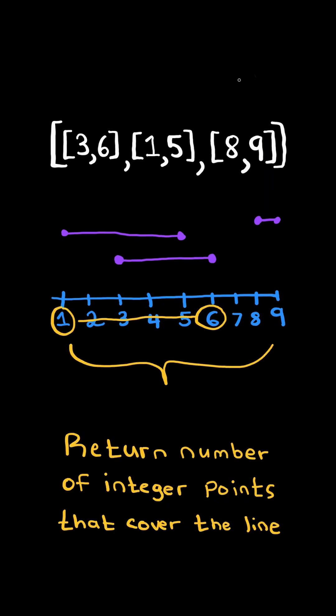For example, 1 all the way up to 6 is covered. That's a total of 6 points. And 8 to 9 is covered, and that's a total of 2 points. And so we return the grand total 8.